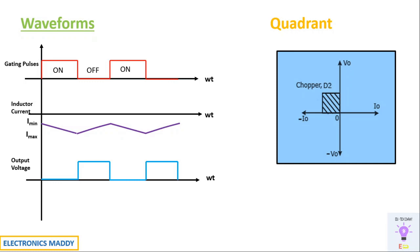So the Type B chopper basically operates in the second quadrant — these are the important things to remember. I hope you were able to analyze the working and waveform analysis on your own. If you have any questions, feel free to type them in the comment section. If you liked this video, please like, share, and subscribe for regular updates. Thanks for watching!